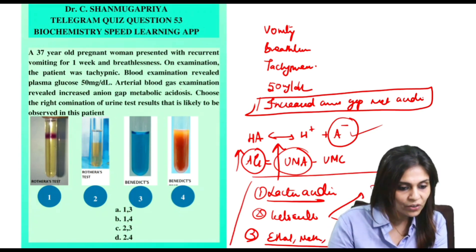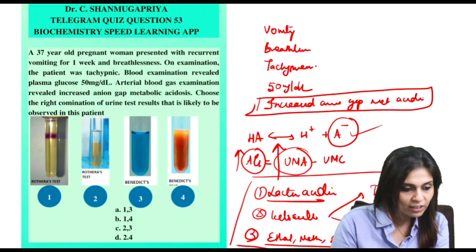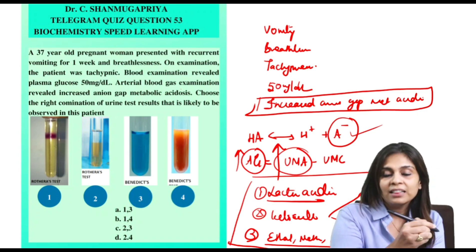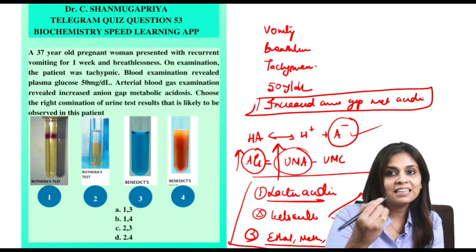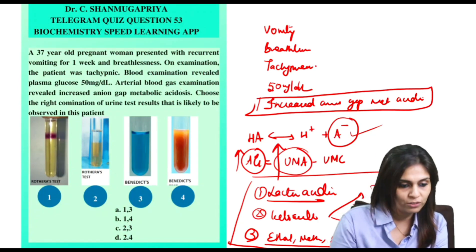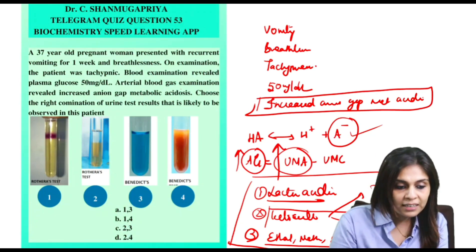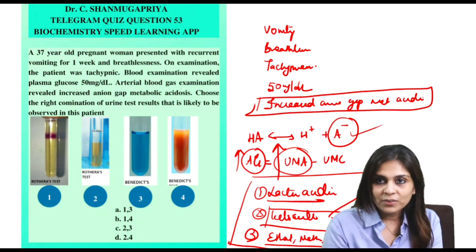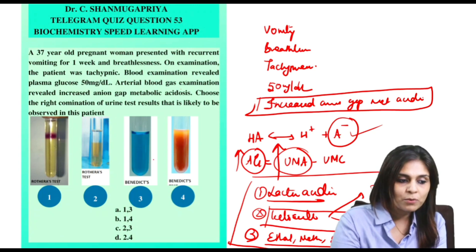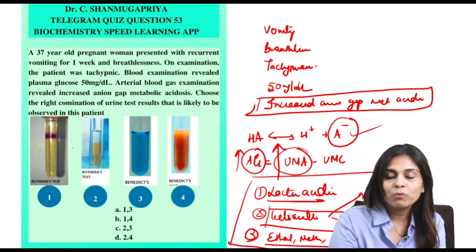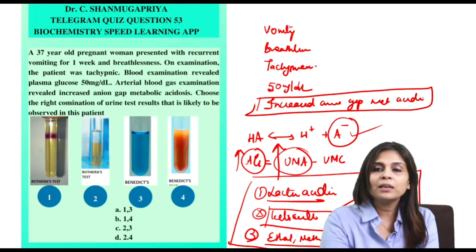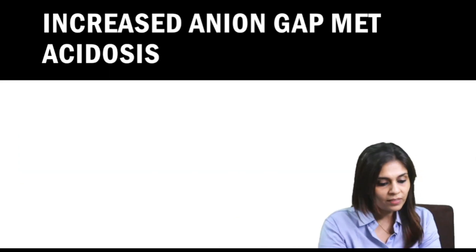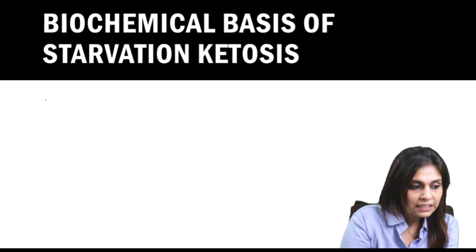Out of all these causes of increased anion gap metabolic acidosis, which one fits this scenario of hypoglycemia with increased anion gap metabolic acidosis? Probably it is starvation ketoacidosis. Before we discuss the urine tests, let me tell you the biochemical basis of starvation ketosis.